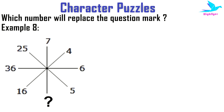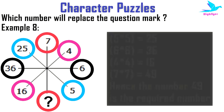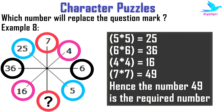In the final example, we see places for eight numbers. Establishing a relationship between the numbers at both ends of each axis: 5² = 25, 6² = 36, 4² = 16 — so 7² = 49. The required number is 49.